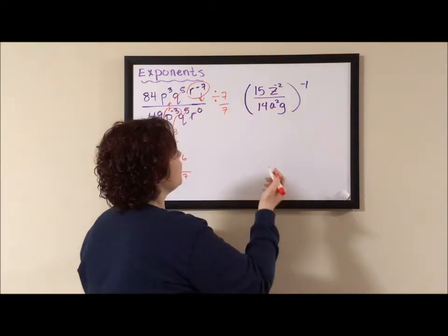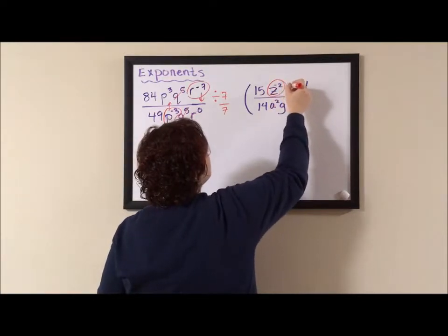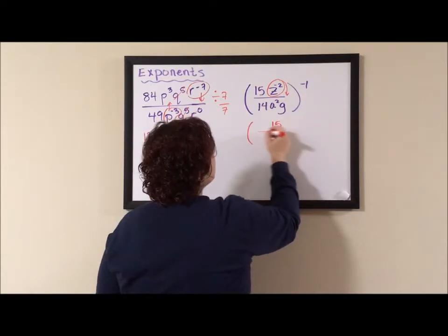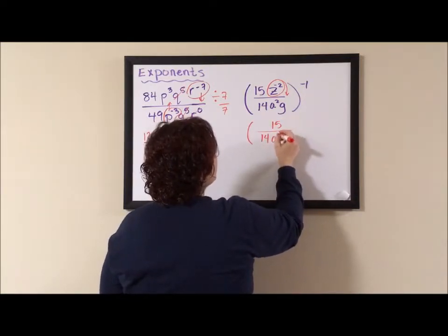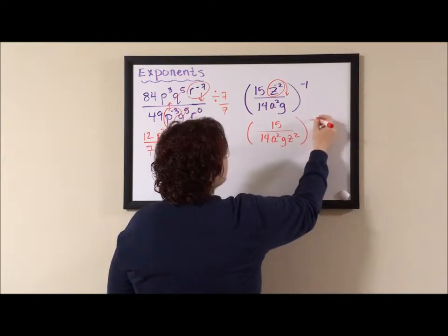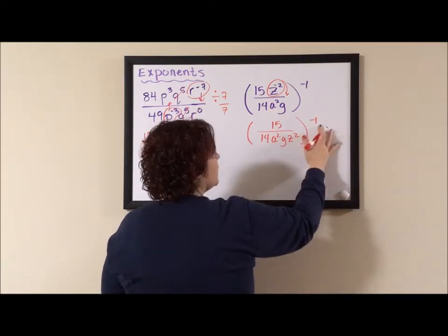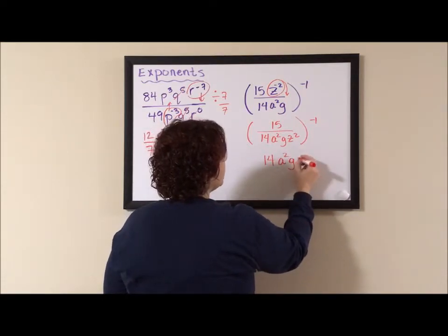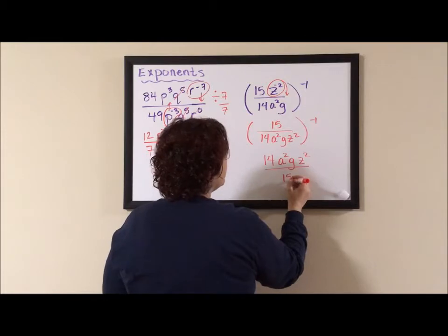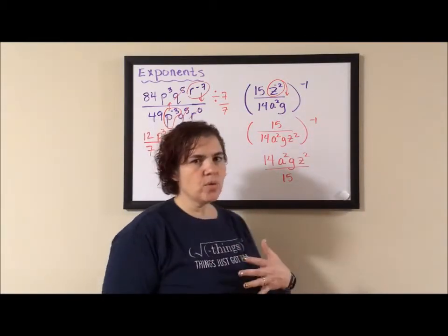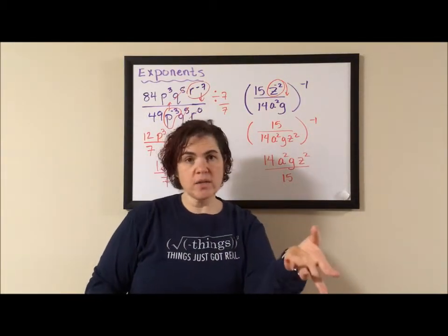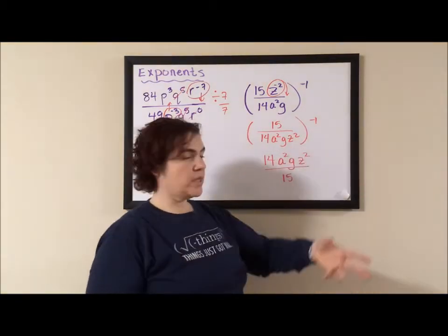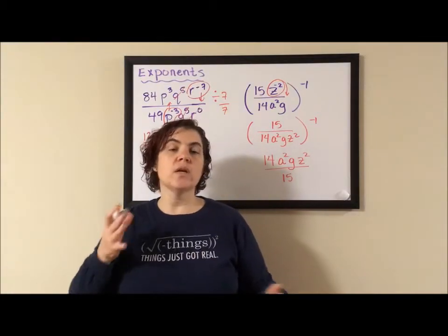I like simplifying my fraction first, so I really want to deal with this negative 2 first, move that z to the denominator. That gives me 15 divided by 14 a squared g z squared. And then that negative 1 reciprocal, I have 14 a squared g z squared divided by 15. Now if that negative 1 was a negative 2, I would have kept the parentheses, kept the positive version of the exponent, and I would have one more step to do. But because it was just a negative 1, it literally just means reciprocal.